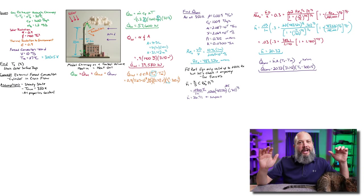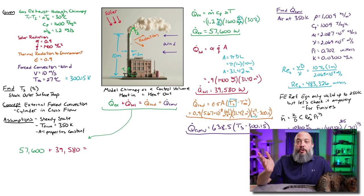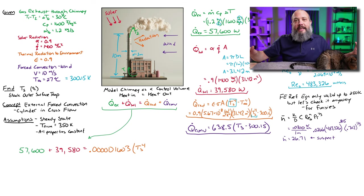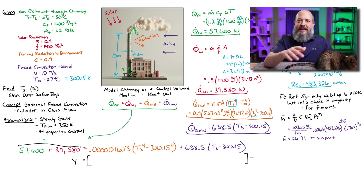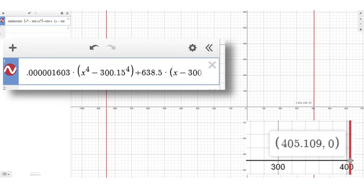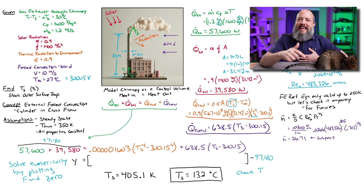So let's head back to my original conservation of energy equation. Green energy from the exhaust gases, 57,000. The red energy term from solar radiation. The orange term from emitting thermal radiation. And then the purple term from the external forced convection with cross flow over a cylinder. There's probably a way to solve a fourth order polynomial, but I am not interested in learning it. I'm just going to solve this numerically by graphing it. If I subtract the constants from the left side over to the right side, I can just plot y equals that big expression. And wherever it crosses the x axis, wherever equals zero, that will be the answer. And that gives me a surface temperature of 405 Kelvin or 132 degrees Celsius.